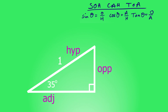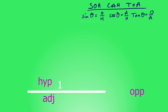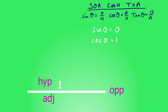Imagine that angle reduces all the way down to zero. We don't really have a triangle anymore — just a flat line. The sine of zero tells us the height of the triangle, and since there's no height, sine zero equals zero. The cosine of zero tells us the width; we know the hypotenuse started at length one, and that baseline has that exact same length, so cosine zero equals one. For tan zero: opposite over adjacent is zero over one, which is just zero.